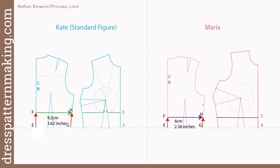Now do the same to the back — take off the same amount from the waist up. First trace the back block, making sure the center back line is at right angles to the waistline and the center back waist touches the waistline. Don't trace the bits that end up below the waist. Measure up at the center back and side back for the same measurement as A to B — points E to F and G to H — and draw a line from F to H.